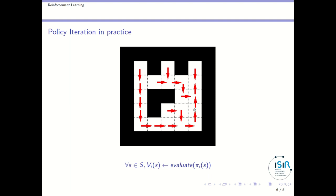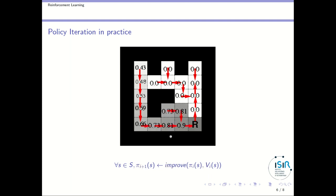Now let's look at a different algorithm called policy iteration. This starts with any policy — here I have taken a somewhat random one, though you can recognize parts of the optimal policy with some arrows changed. The first step is to compute the value of following this policy using value estimation. The result shows that states leading to the reward get positive values, but states whose arrows loop away from the reward get value zero.